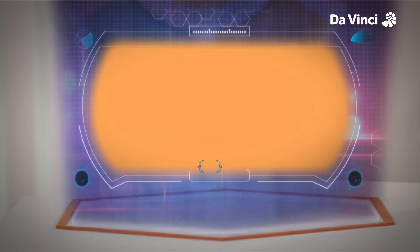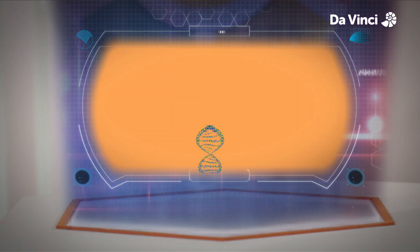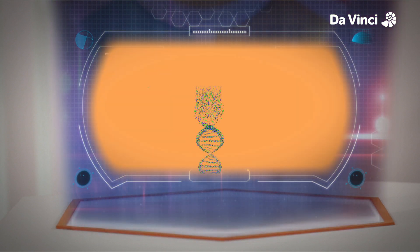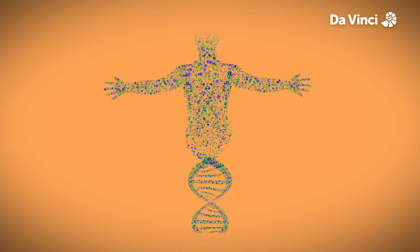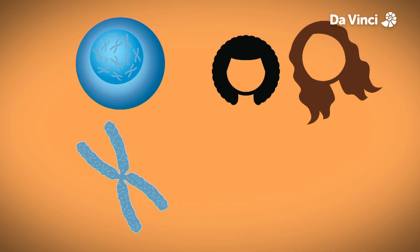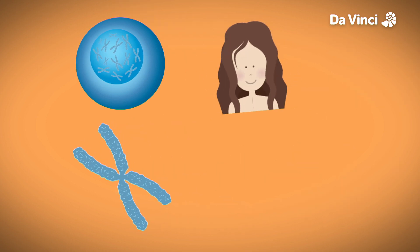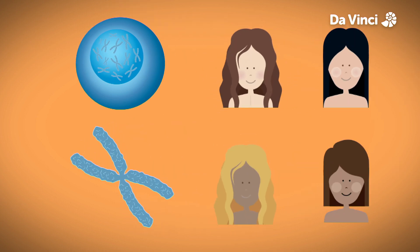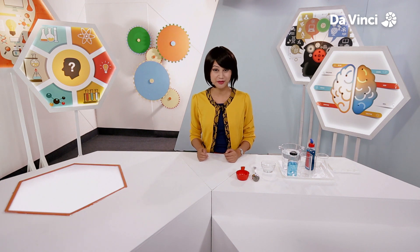DNA is the molecule that carries most of the genetic instructions used in the development, functioning and reproduction of all known living organisms. It is present in the nucleus of our cells and decides characteristics such as our hair type, skin type and so on. Would you like to find out how to extract your own DNA at home? I've got a great experiment to show you how.